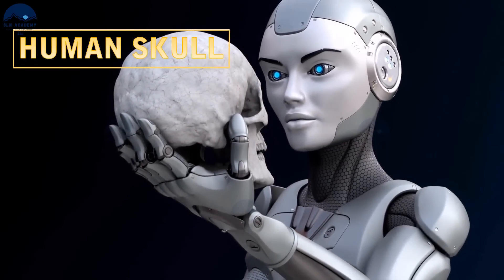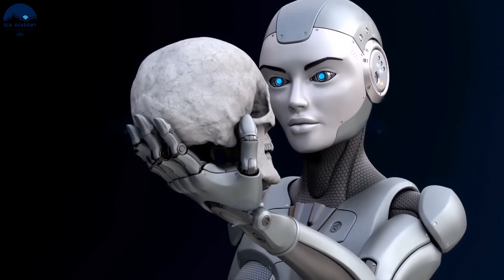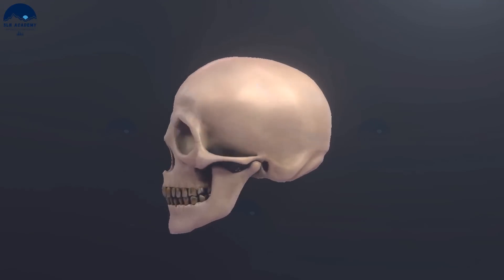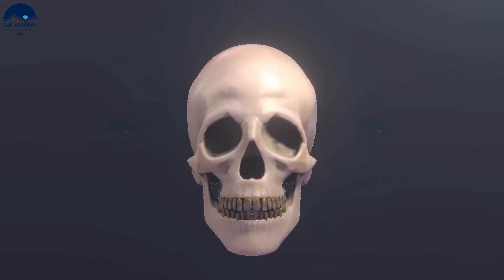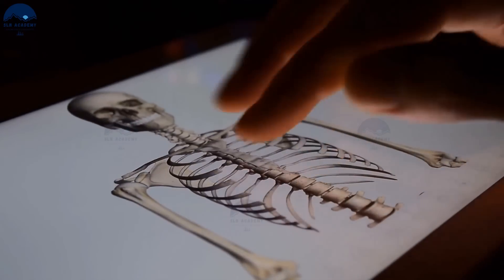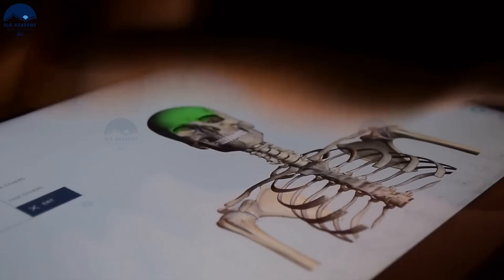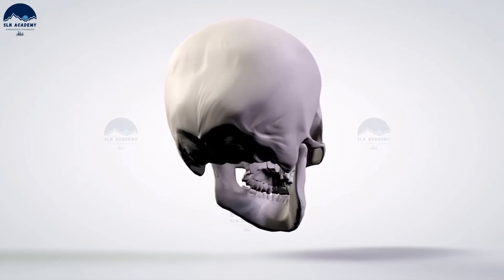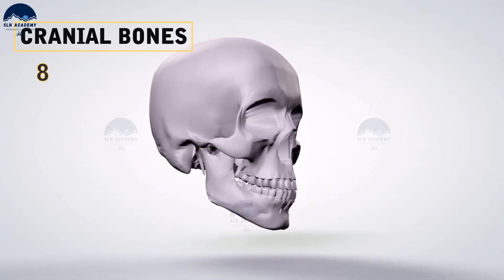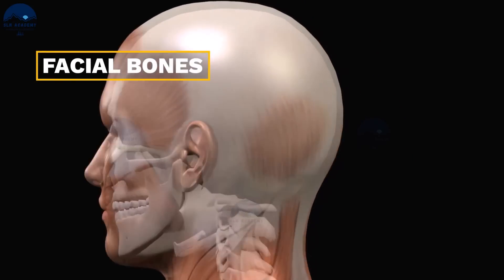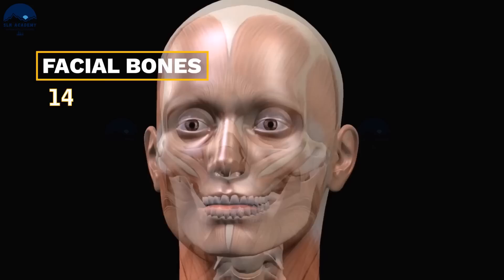The human skull is the bony structure that forms the head in the human skeleton. The skull is composed of two sets of bones: cranial bones and facial bones. The skull is made up of 22 bones and 7 associated bones. Cranial bones are 8 in number and form a hard protective outer covering called the cranium for the brain. The facial region is made up of 14 skeletal elements which form the front part of the skull.